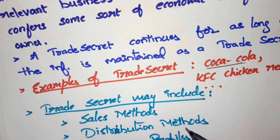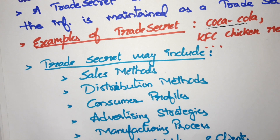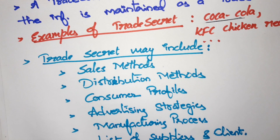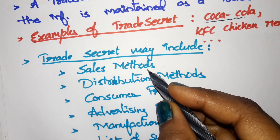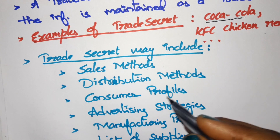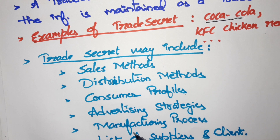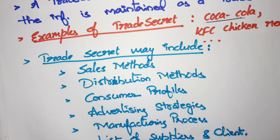Trade secrets may include sales methods, distribution methods, consumer profiles, advertising strategies, manufacturing processes, and list of suppliers and clients. All these are also examples of what a trade secret may include.